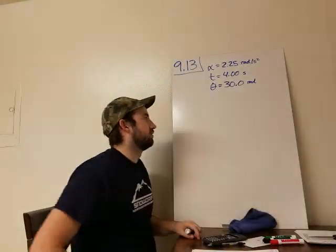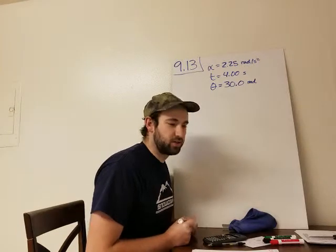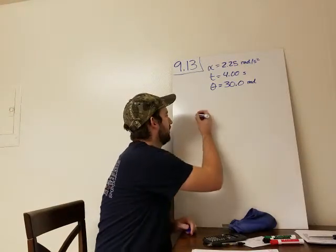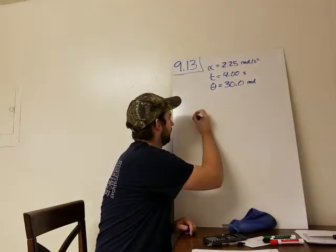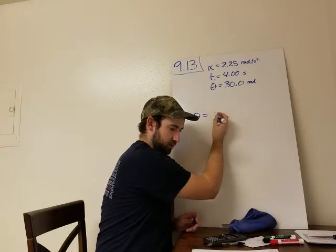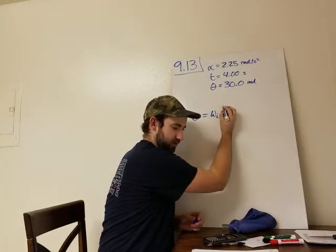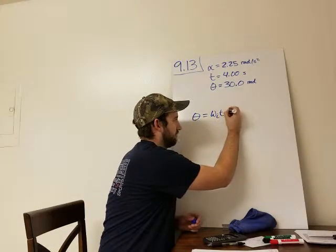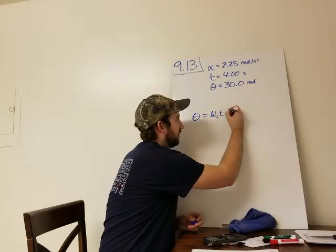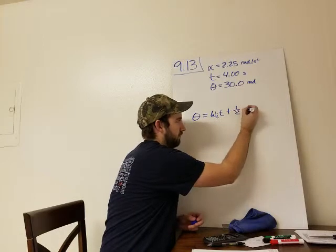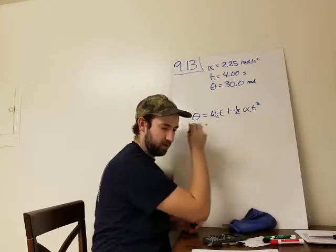But for this, we're going to need to use one of our equations. The one we're going to use is theta equals the initial angular velocity times time plus one-half alpha t squared.